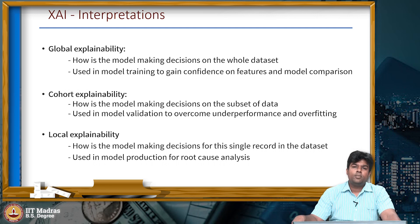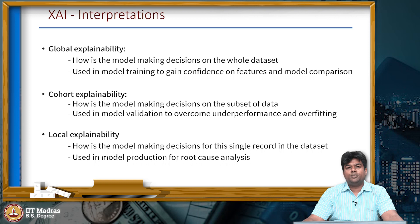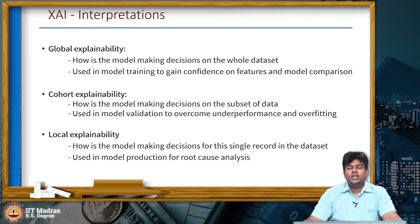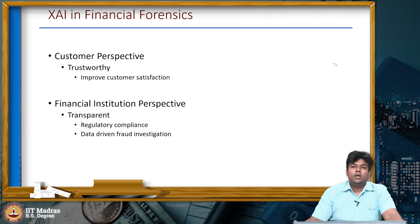Finally, local explainability. In local explainability, we try to understand how a model has made a prediction on a specific individual record. Why do we need model explanation at the granular level of a record? Because models in production provide outputs on which business decisions are made. If there is a discrepancy, we need to do a root cause analysis, and for that we need to know how individual features contributed to that specific prediction.